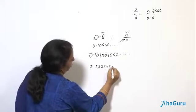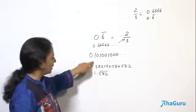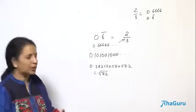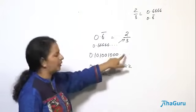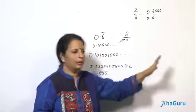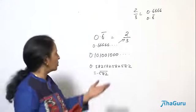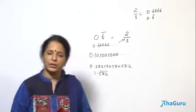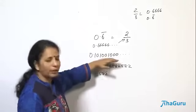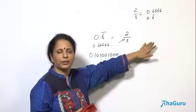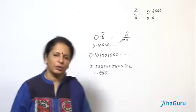For example, consider the decimal 0.582582582... — here 582 is repeating, so this can be written as a fraction. But consider a number like 0.1010010001... where after 1 you have one zero, then two zeros, then three zeros — it is 10 followed by 100 followed by 1000 and so on, with no repetition. Such a number never stops and never repeats, so it can never be written as P by Q. It is an irrational number.